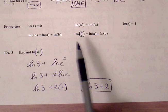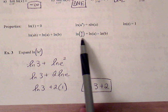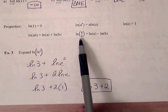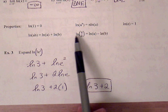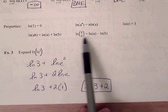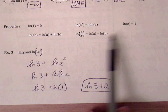Next is quotient property, which is expanding this into something a little bit more friendly, a little bit easier to use. So natural log of A over B, we can rewrite this as natural log of A minus natural log of B.